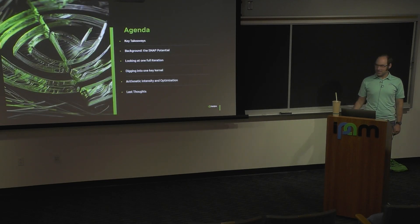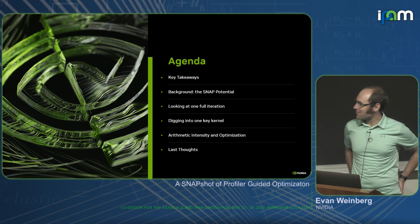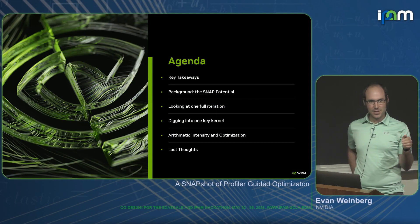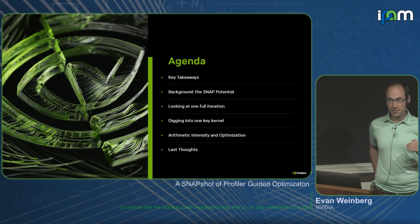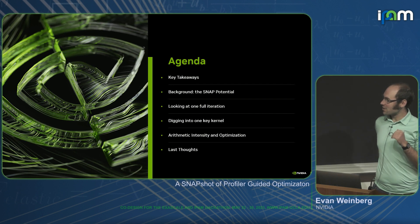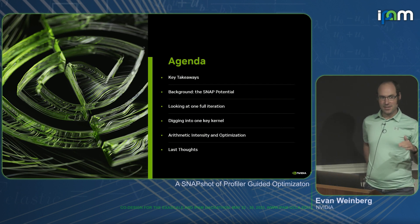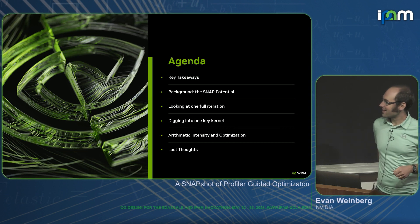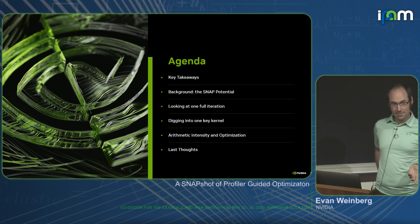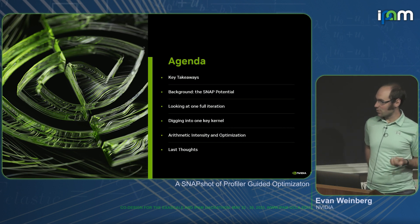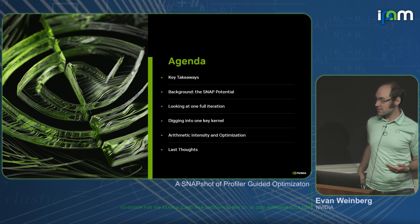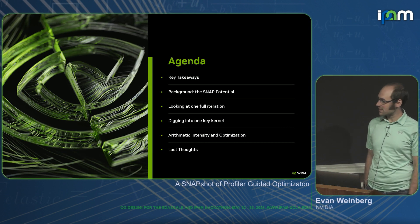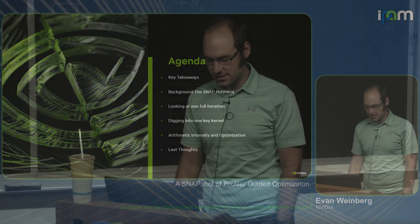Depending on how long I ramble, we'll see how many sections we get to, but I'm going to start with key takeaways. We'll talk a little bit about the SNAP potential as a vehicle for discussion. We'll look at a full iteration of the SNAP potential running LAMMPS, dig into one kernel, talk about arithmetic intensity and some optimization, and then give some last thoughts.